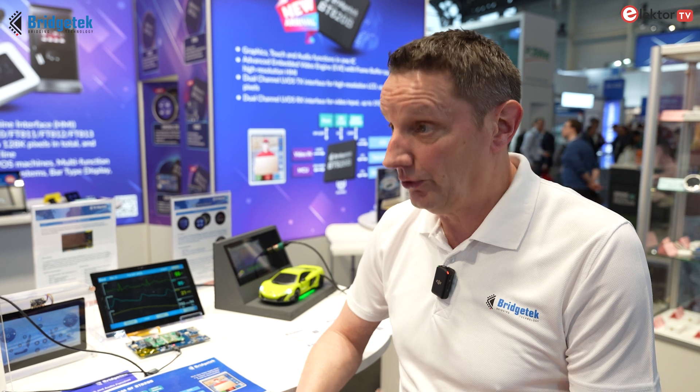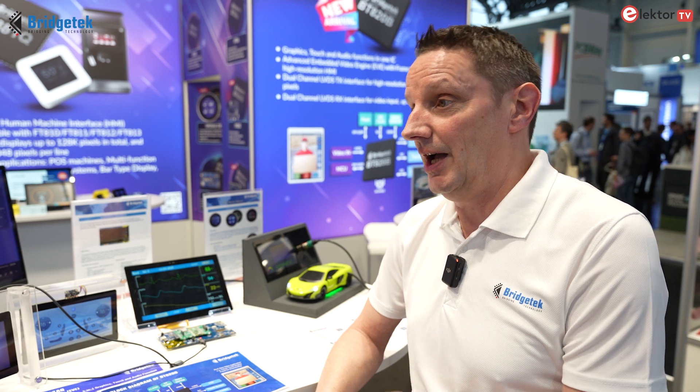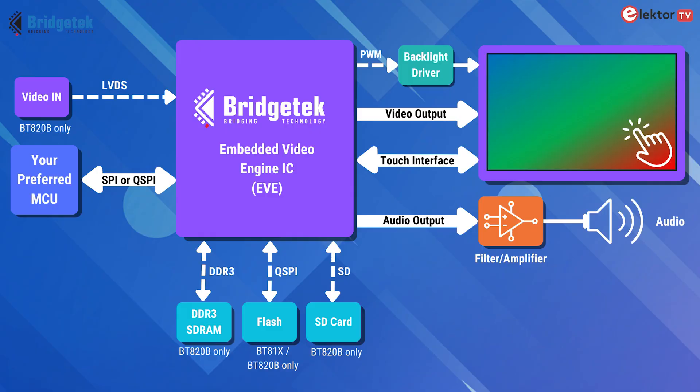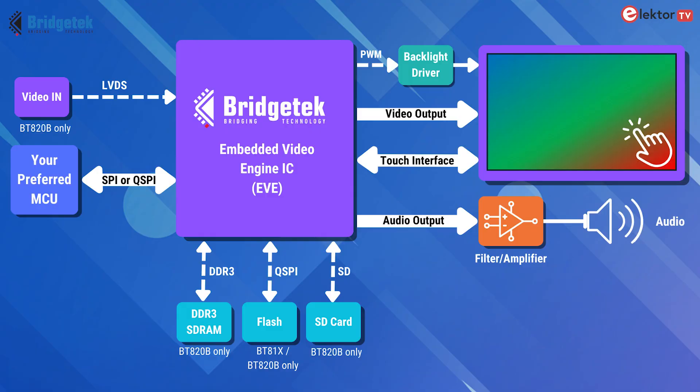The key thing about this graphics controller is it allows you to use a low-cost or low-powered MCU, as long as you've got SPI or quad SPI to communicate with the graphics chip. The idea is to take the processing power away from the lower-cost MCU, because typical microcontrollers with a graphics engine inside are quite complicated and take a long time to program. EVE makes graphics simpler.